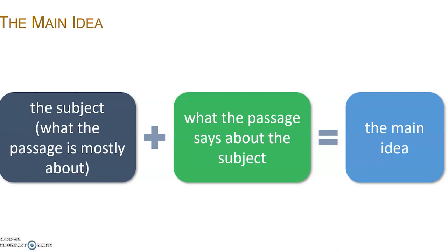It gave us a couple of things — it talked about the size: they can be really small or really large. It also talked about where they live, in the ocean or in rivers. And it told us about teeth. So if we were to say all those things — size, where they live, teeth — we might call that facts about sharks or information about sharks. And that's going to be our main idea.